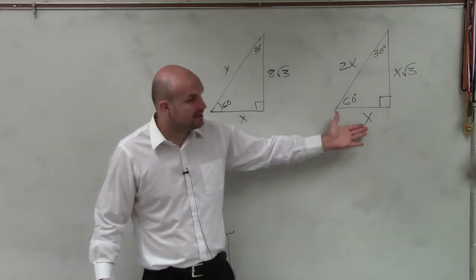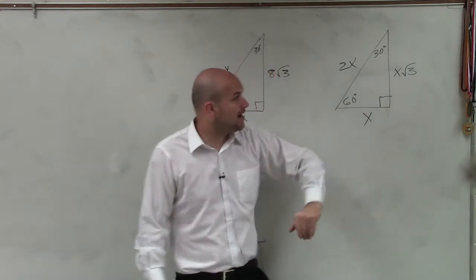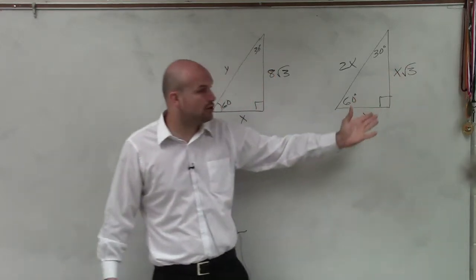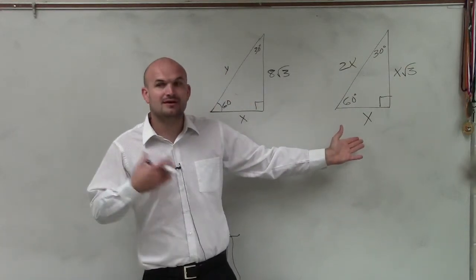If here's my short leg, to get to this leg, I had to multiply by the square root of 3. So now if I have the long leg and I want to go back to the short leg, I'm going to have to divide.